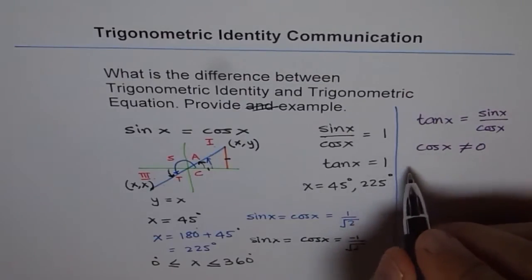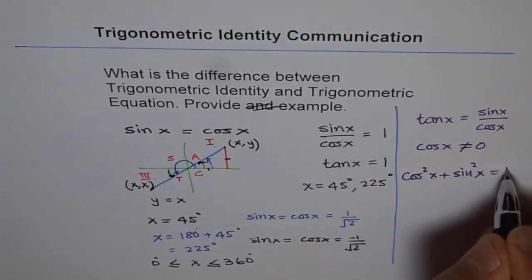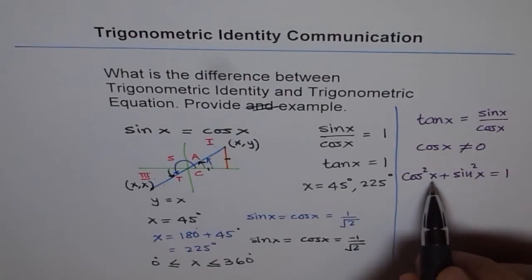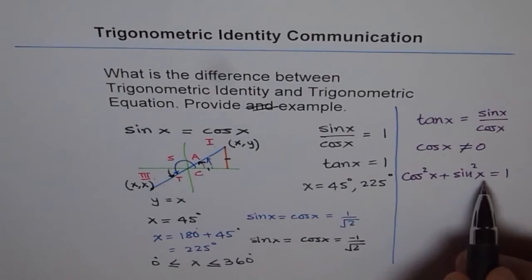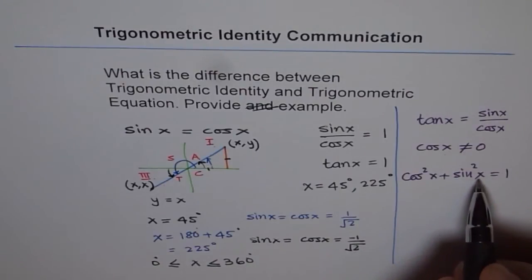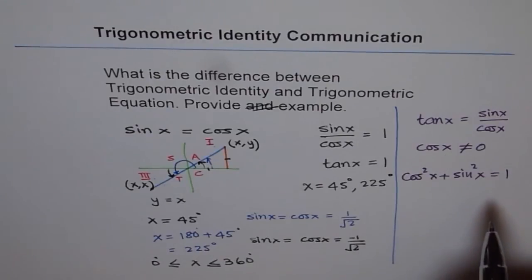So identities are also equations, but they are special equations in the sense that they are always true. For example, cos squared x plus sin squared x equals 1 is a trigonometric identity — we call it a Pythagorean identity. For any value of x this equation will always be true, therefore it is an identity. It is also an equation. Any equation which is true for all values in its domain is called an identity. Equations are true for limited values, whereas identities are true for an infinite number of values — all values in their domain.